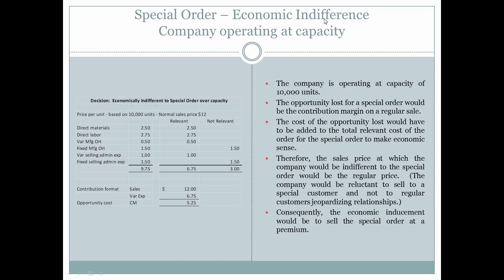Special order economic indifference — now let's consider a company operating at capacity. So far we have looked at a company operating under capacity, but what happens if the company is operating at capacity? We still have the same price per unit and the normal sales price, but now we have 10,000 units because they're selling at capacity. So now our total costs are $9.75 per unit. The relevant costs for a particular order are $6.75, and the not-relevant or unavoidable costs are $3.